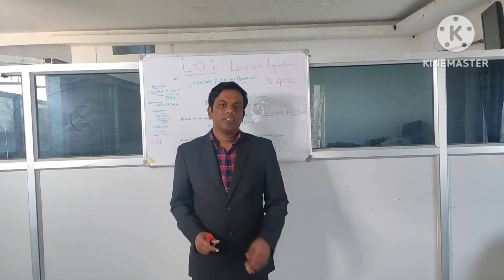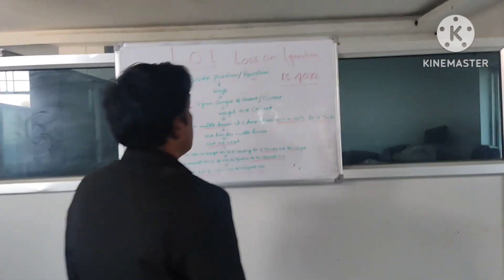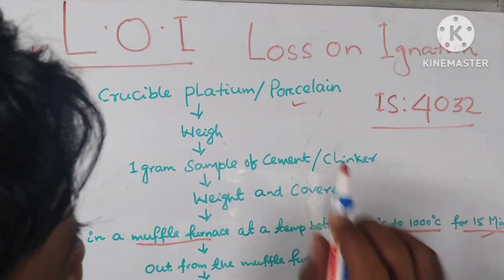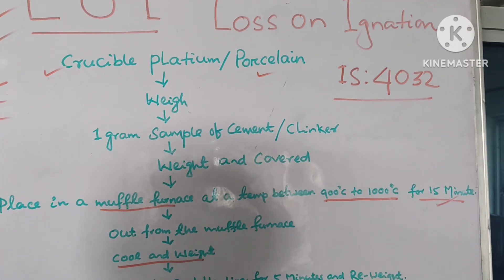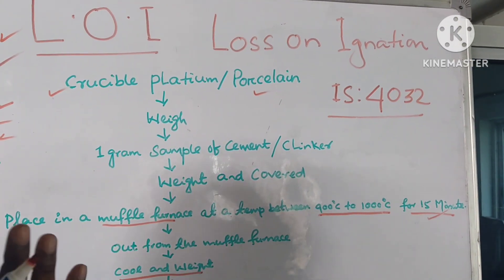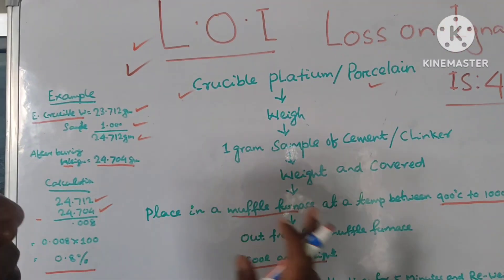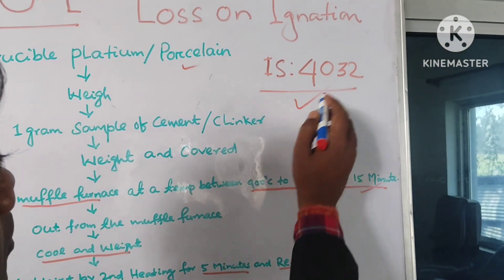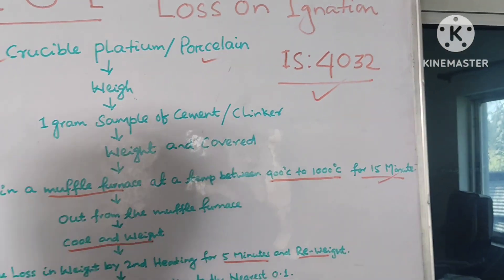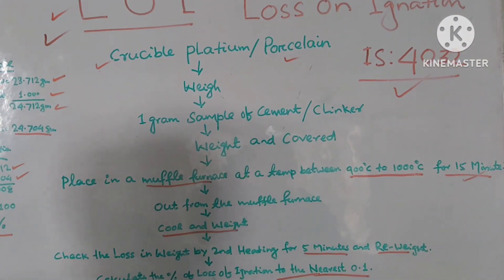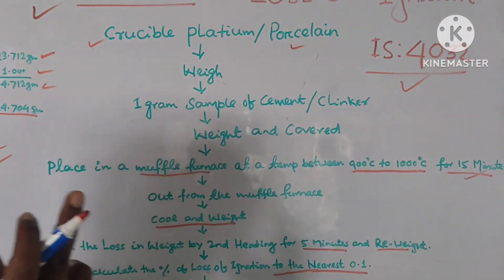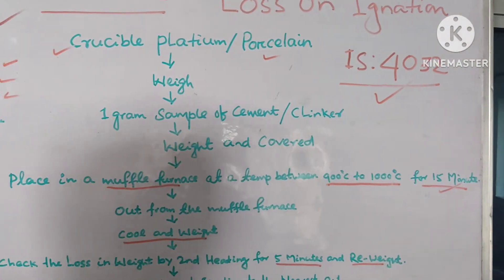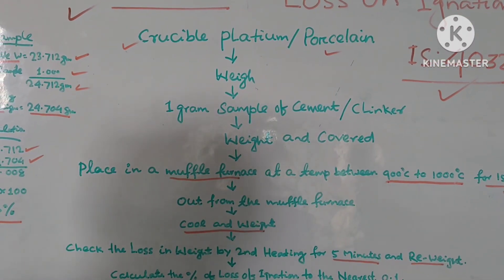So today our topic is how LOI determine step by step. So please come with me. So today we are studying LOI determination. LOI means loss on ignition. It is the testing procedure. We can say it is a part of testing to determine the cement. As per the testing method IS:4032, as per the inner standard, as per the testing procedure, we have to follow IS:4032.